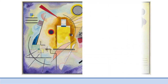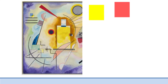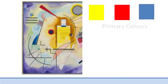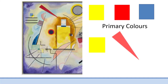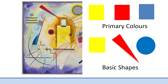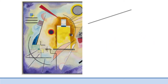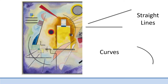Let's look at the left side of the painting first. Notice the colours Kandinsky has used — Yellow, Red and Blue are all primary colours. He has used these primary colours to create basic shapes such as rectangles, triangles and circles. The shapes are connected using straight black lines and curved lines. This side of the painting feels light, bright and even spacious.